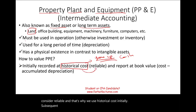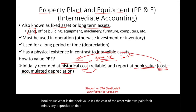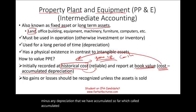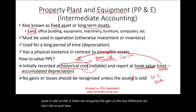Subsequent to acquisition, once we buy the asset, it is reported at book value. Book value is the cost of the asset — what we paid for it — minus any accumulated depreciation. No gains or losses are recognized unless the asset is sold. This discussion is based on U.S. generally accepted accounting principles.